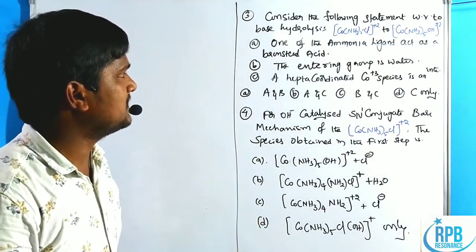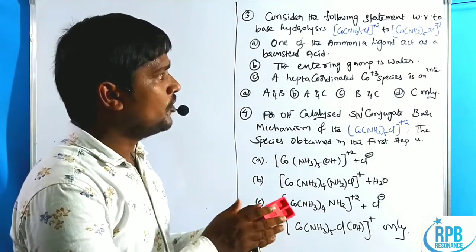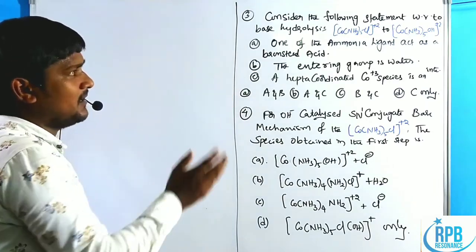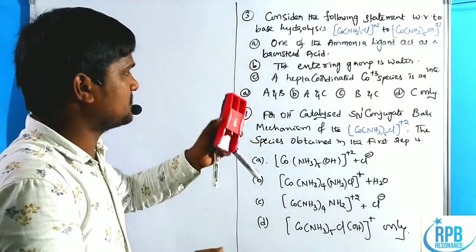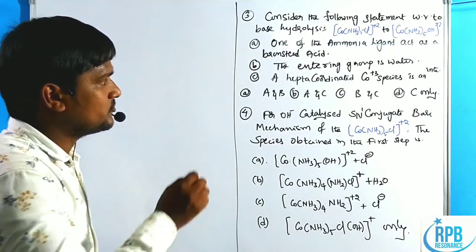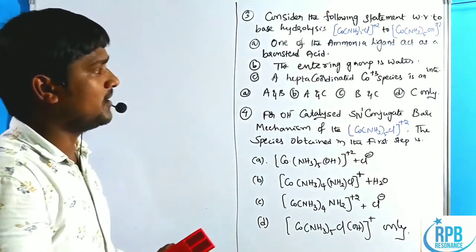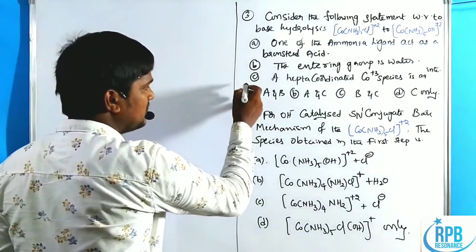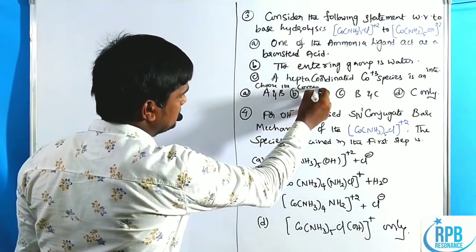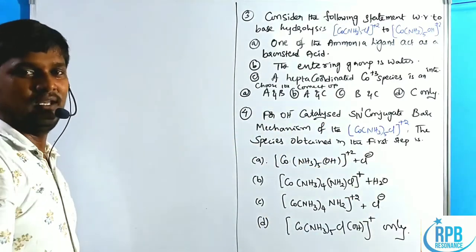Question number 3: consider the following statements about the base hydrolysis of [Co(NH3)5Cl]²⁺ converting to [Co(NH3)5(OH)]²⁺. The options are: A — one of the ammonia ligands acts as a Bronsted acid; B — the entering group is water; C — the intermediate is hepta-coordinated. The answer choices combine these as: A and B, A and C, B and C, or C only.